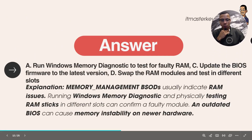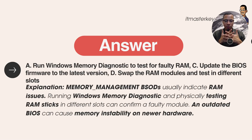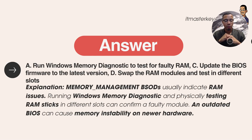The correct answers are A, C, and D. C is update the BIOS firmware to the latest version — BIOS is the basic input/output system, and if it's not updated, certain things won't work or will act weird. D is swap the RAM modules and test in different slots. Sometimes the slots on the motherboard can collect dirt or grime, or if you've knocked the device around, the RAM can get loose or unseated — try different slots to see if that helps.